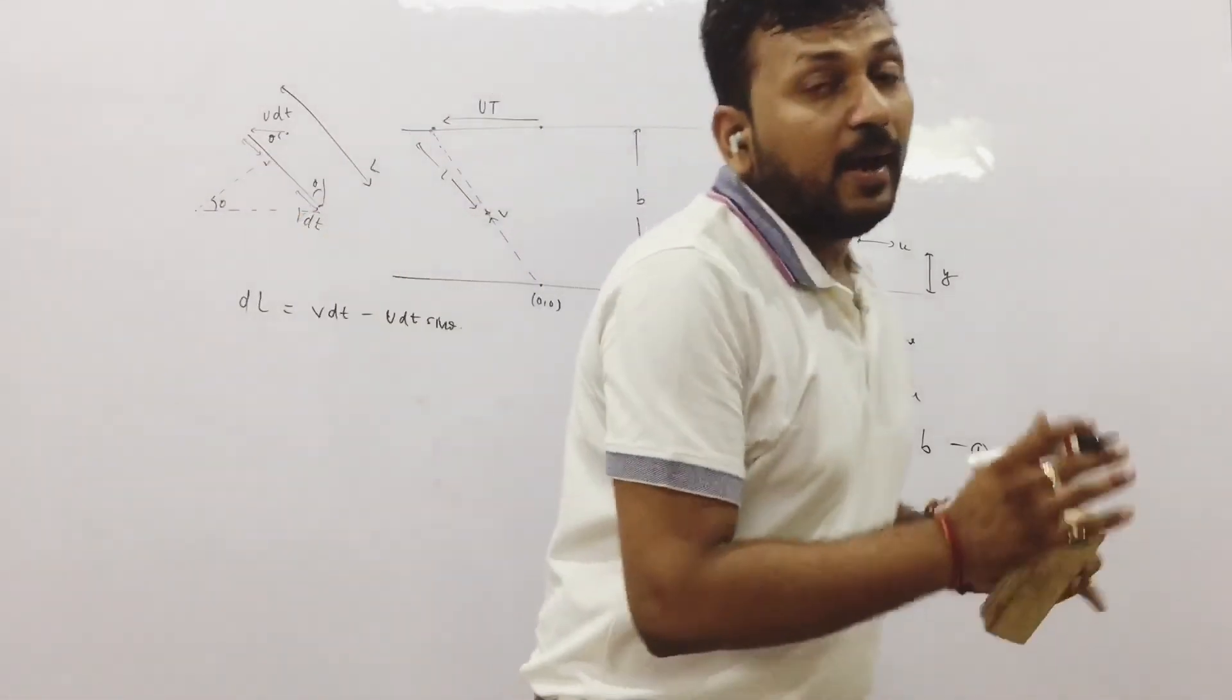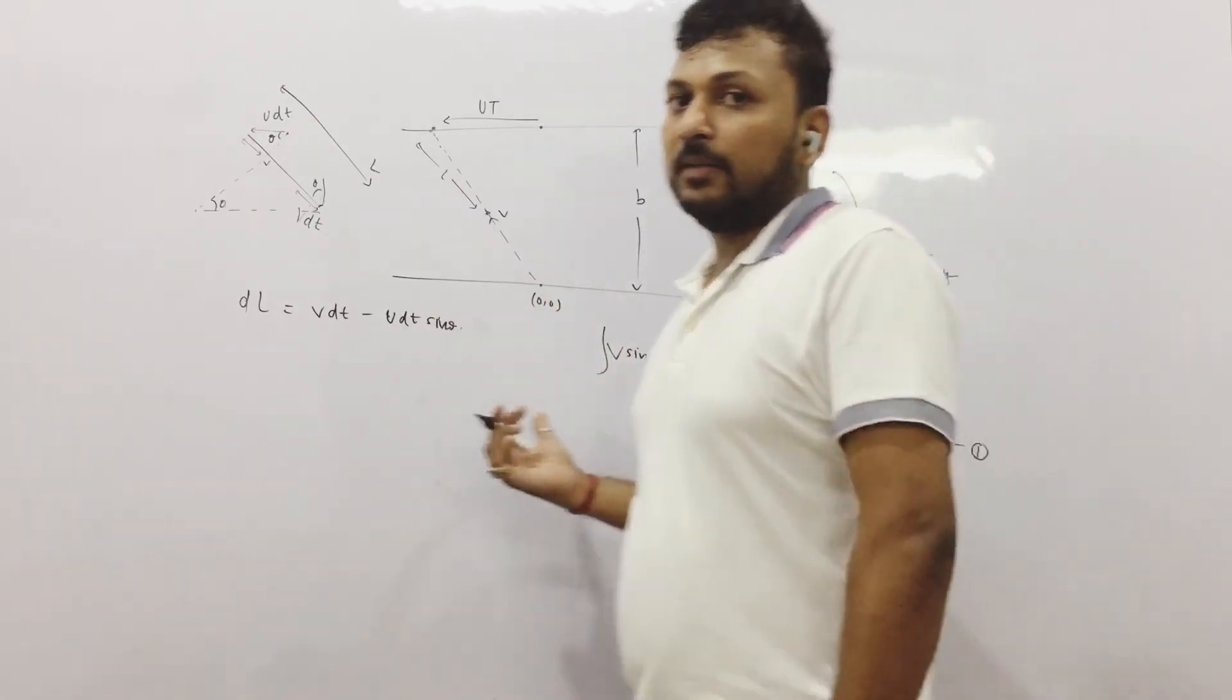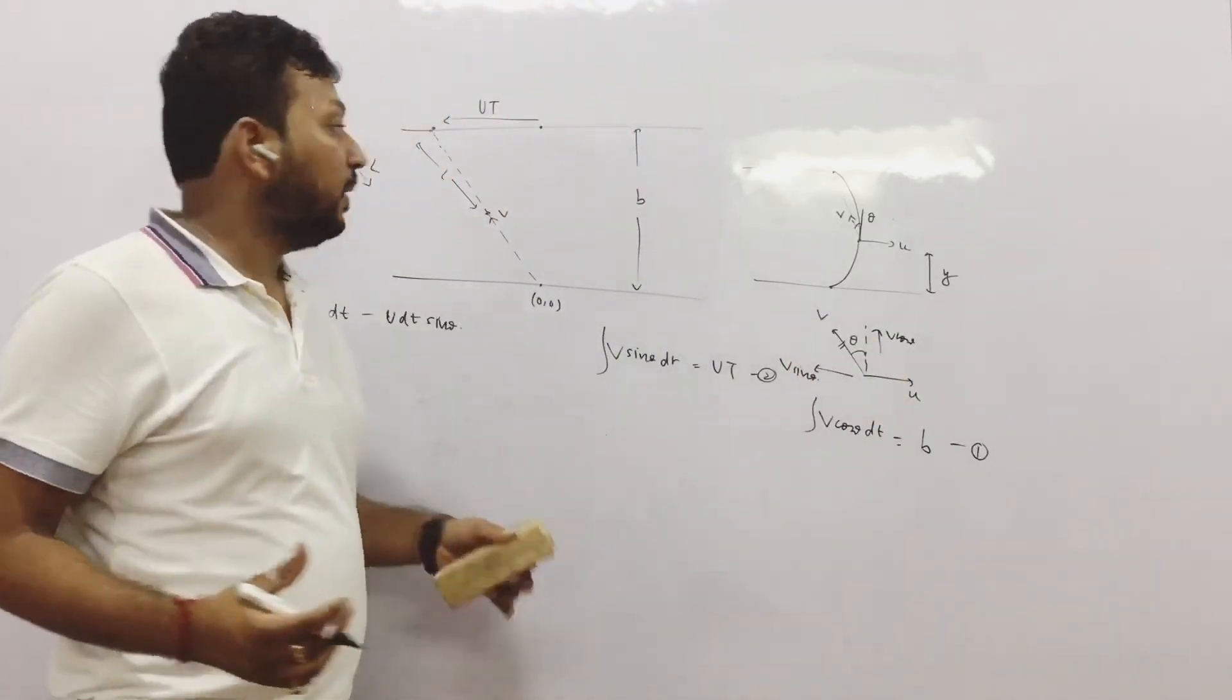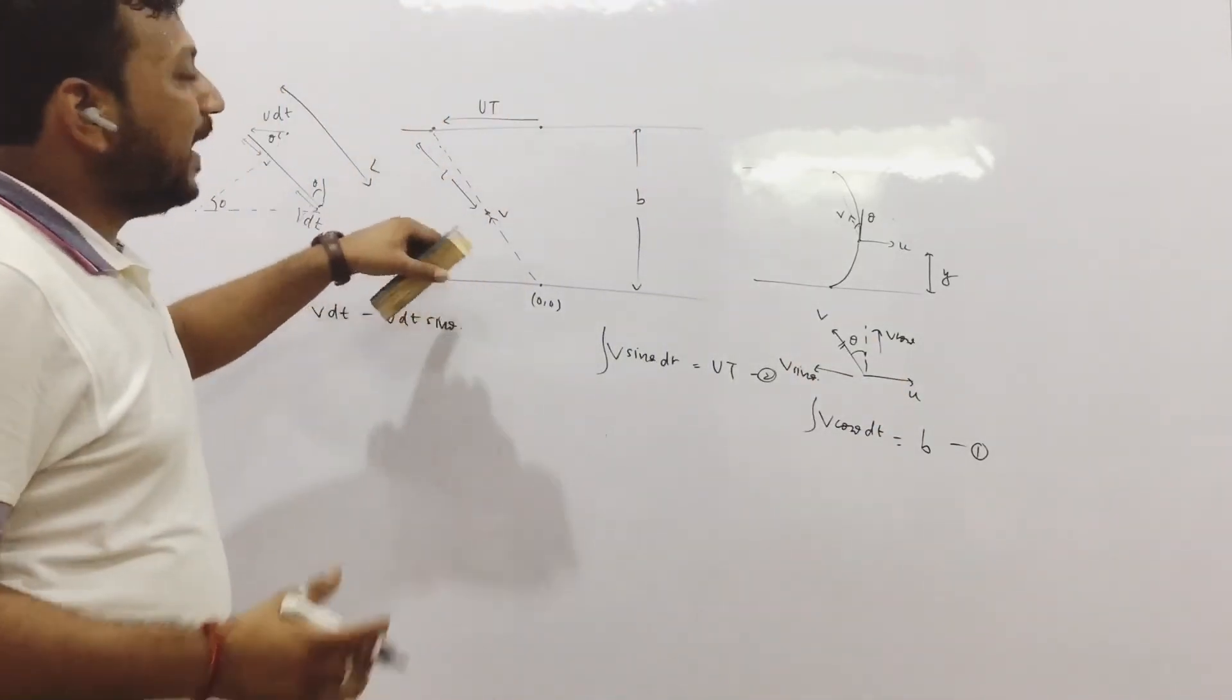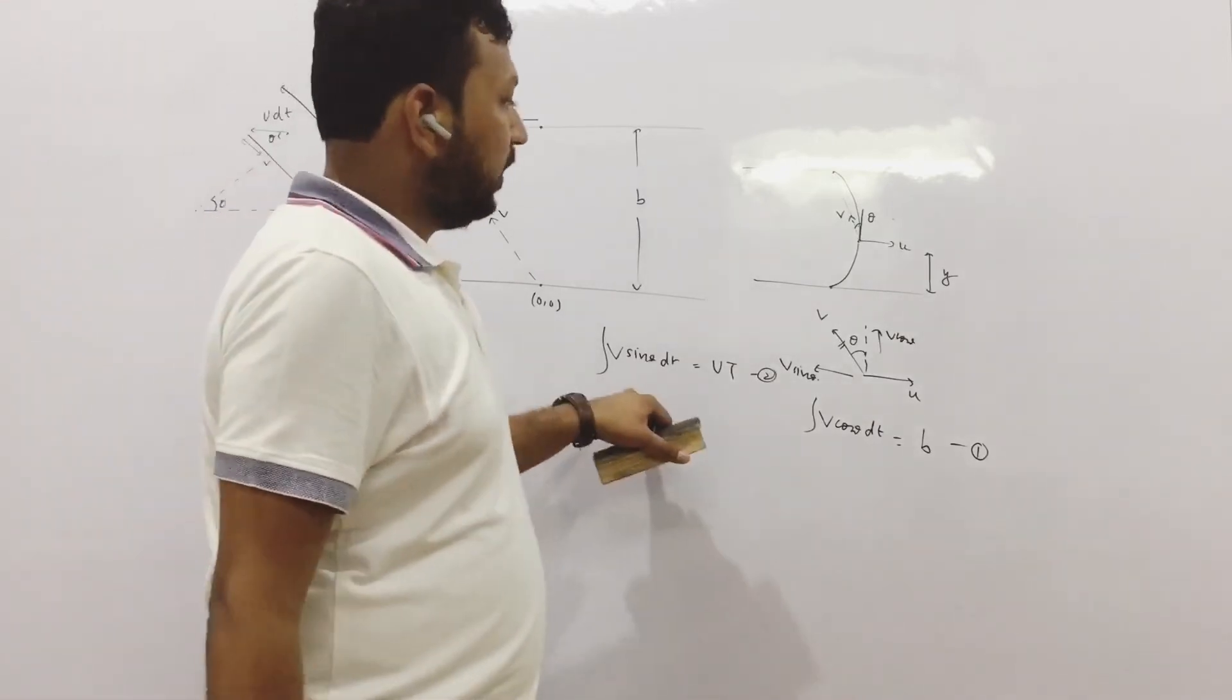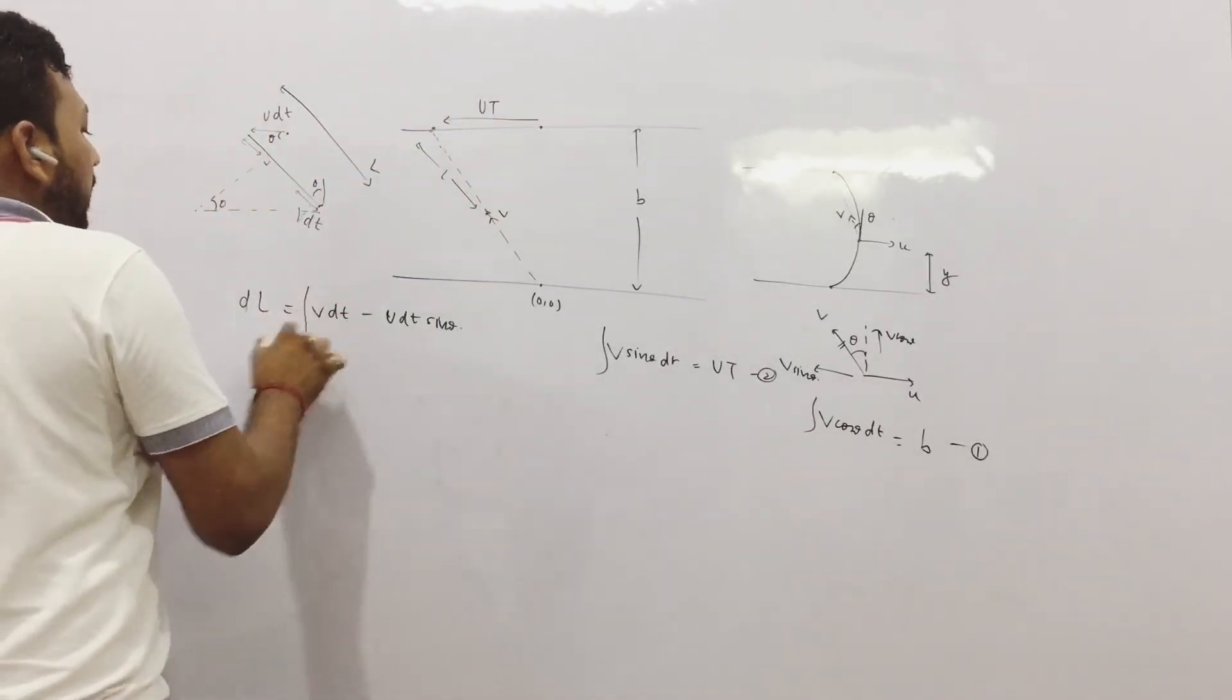This is the thing we have to understand. These are the 3 equations that we need to solve and finally we have the answer. So if you have any doubts in this, you can write in the comments. But I think after seeing the video 2-3 times you will be able to understand. So this is the master equation. At any instant the l distance which was there, dl was covered. In the vertical direction and the horizontal direction we solved.